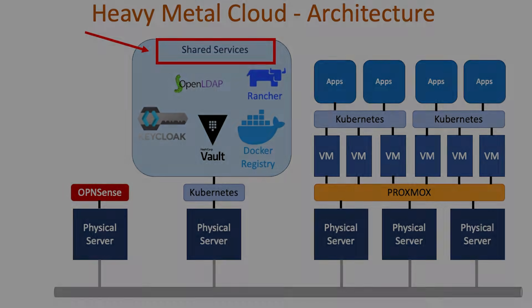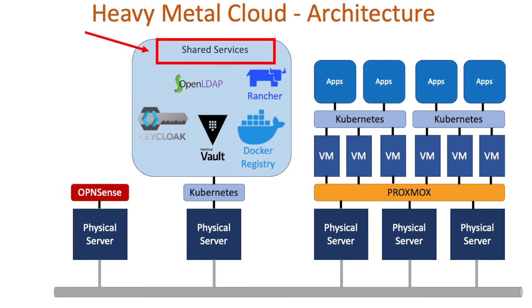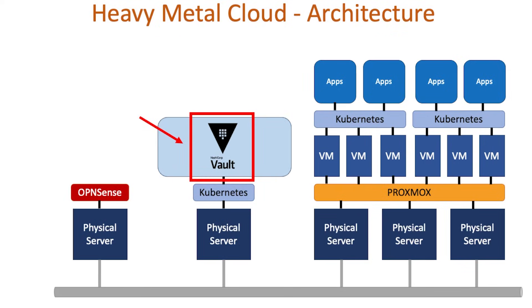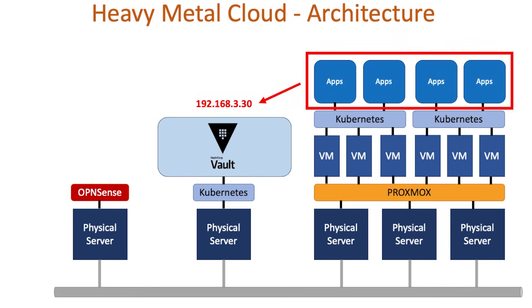For this video, I'll assume you have a rough working knowledge of DNS. And by the way, if you're interested in a video about DNS fundamentals, let me know in the comments below. In my cloud, my apps will be reaching out to some shared services. One example is Vault, which is used for secret management. But instead of using the IP address, I'd like to use a domain name like vault.heavymetalcloud.lan. Since LAN is a private top-level domain, I need a way to look up the IP address, and this is where OpenSense comes into play.